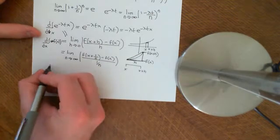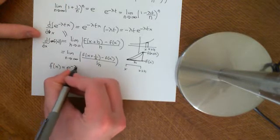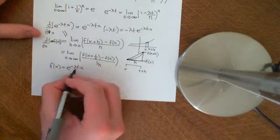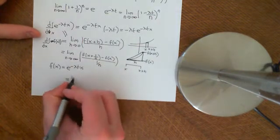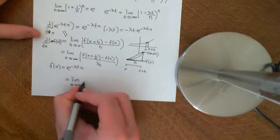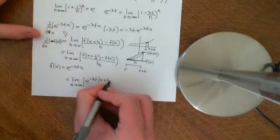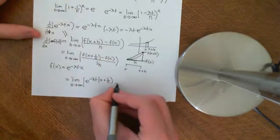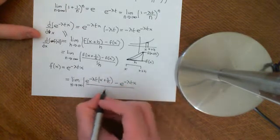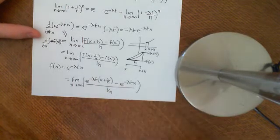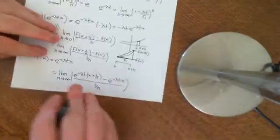Now, in place of just an arbitrary function f of x, let's replace it with e to the negative lambda t x. As far as this derivative is concerned, lambda t is just a constant. So this derivative becomes the limit as n approaches infinity of e to the negative lambda t times x plus 1 over n, minus e to the negative lambda t x, divided by 1 over n. Now we can split this up — let's go on to the next piece of paper.